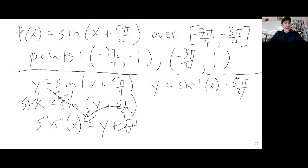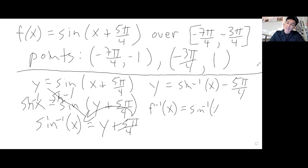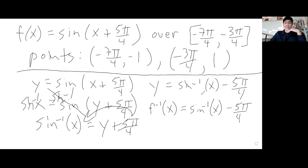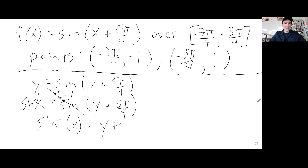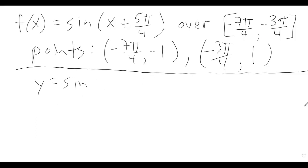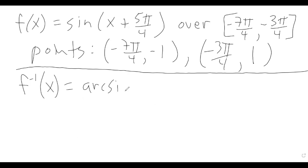Since the original was called f, the inverse should appropriately be called f inverse of x. This is your inverse equation — this is the inverse of that original function. So f inverse of x equals arc sine of x minus 5 pi over 4. I'm writing arc sine, which is the same thing as sine inverse.